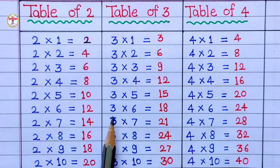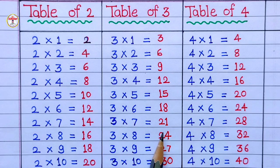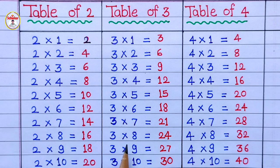3 6's are 18, 3 7's are 21, 3 8's are 24, 3 9's are 27, 3 10's are 30.